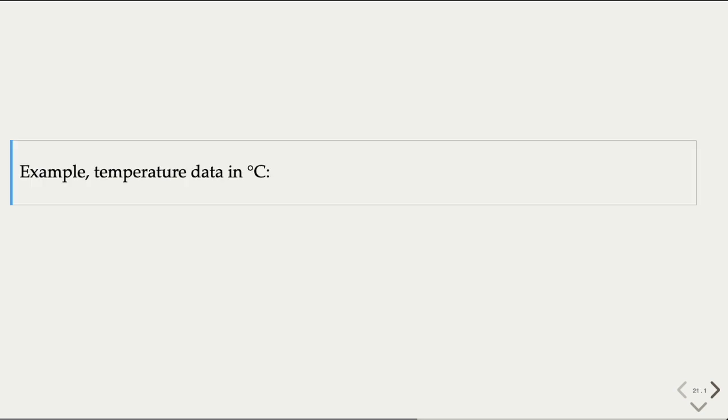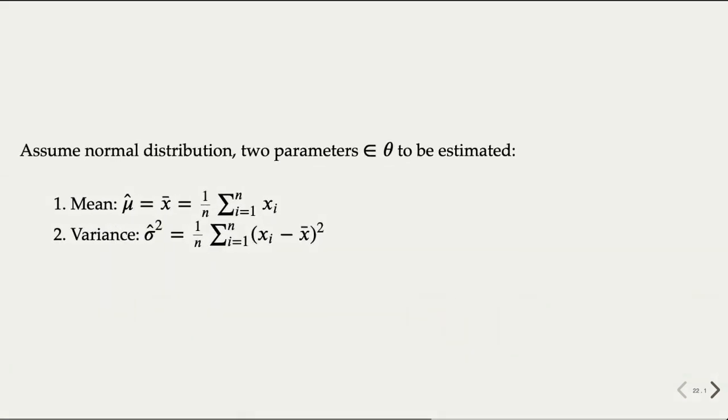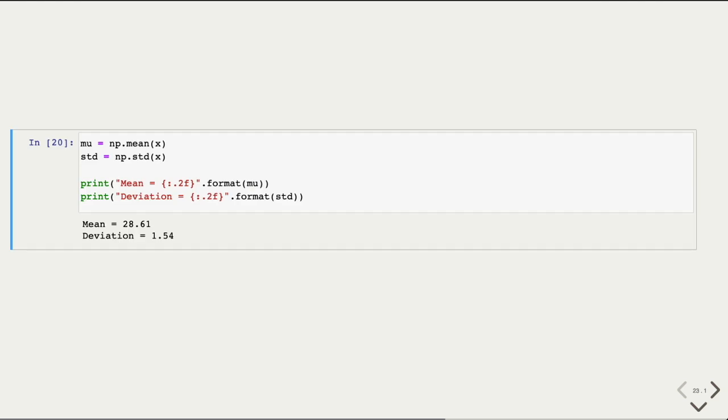So let's look at an example. Here are some temperature data in Celsius. If we assume this follows a normal distribution, there are two parameters that we need to estimate based on the sample: the mean, which can be computed by the average, and the variance, which can be computed by the square sum of error. So we do that here and get the mean and deviation.